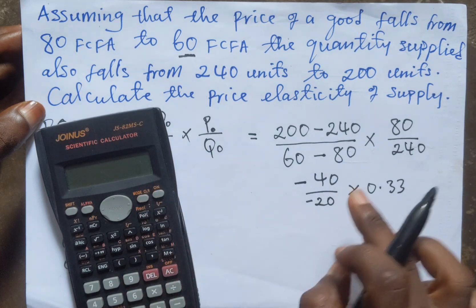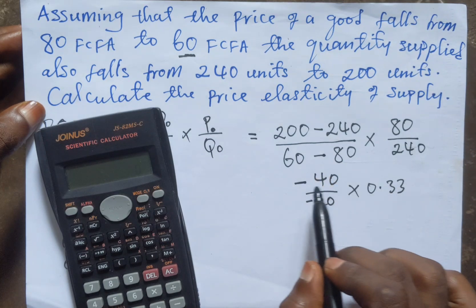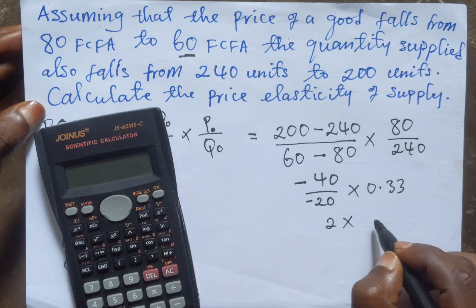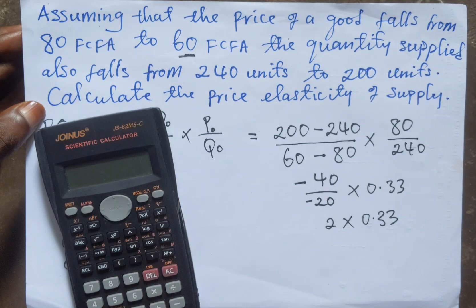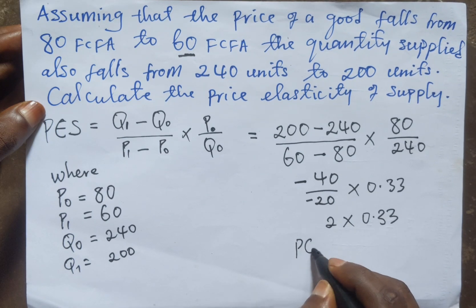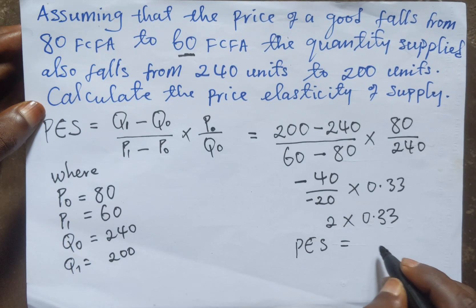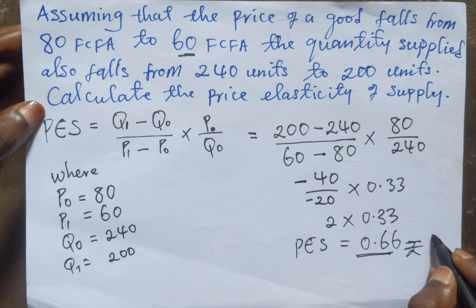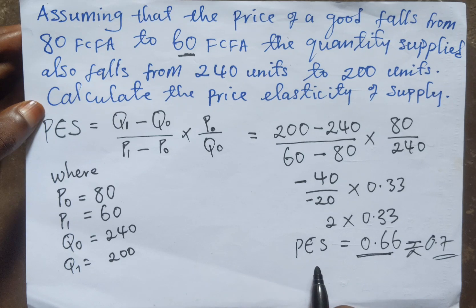The negative signs cancel with each other. We then multiply by 0.33, so two times 0.33 gives us a price elasticity of supply equal to 0.66, which we can round to 0.7. The price elasticity of supply is said to be relatively inelastic.